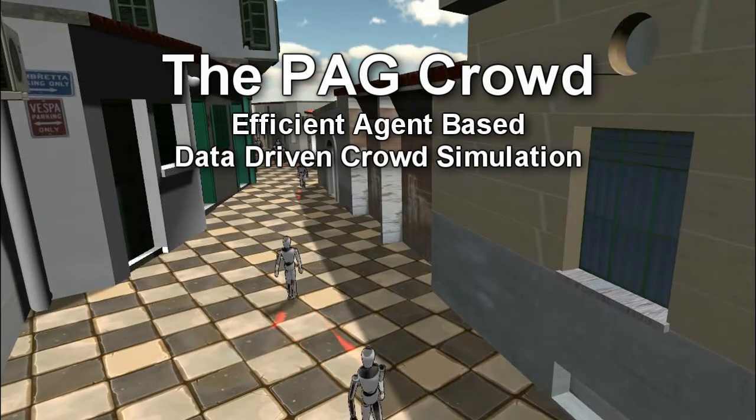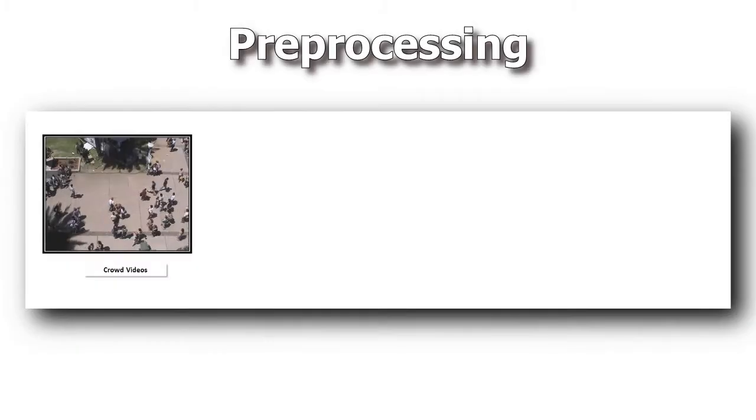In this work, we propose a method for efficient agent-based data-driven crowd simulation. This method consists of two phases: preprocessing and runtime simulation.